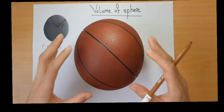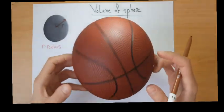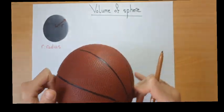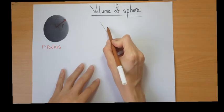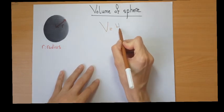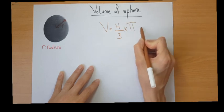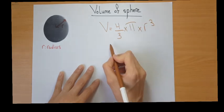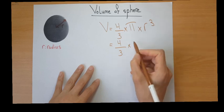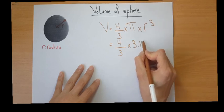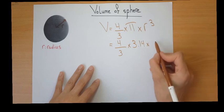Now we want to measure the volume of a sphere — like a football, a basketball, or any other sphere. The formula for the volume of a sphere is 4 over 3 times pi times r cubed, which is 4/3 times 3.14 times r times r times r.